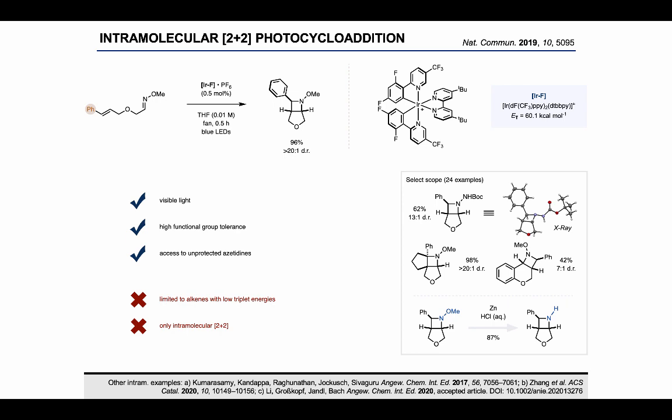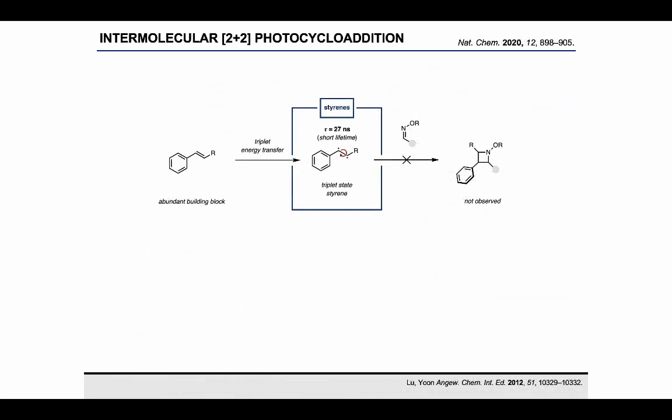At the same time, this approach was unfortunately limited to the intramolecular cycloaddition reaction. The reason for that is that the triplet styrene preferentially undergoes isomerization instead of engaging in the desired intermolecular cycloaddition process. However, when we tried to react beta-methyl styrene with this aromatic oxime, we didn't only see styrene isomerization but also isomerization of the oxime component, indicating that energy transfer to the oxime occurs as well.